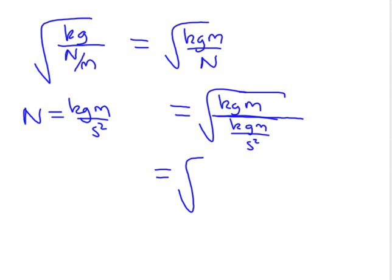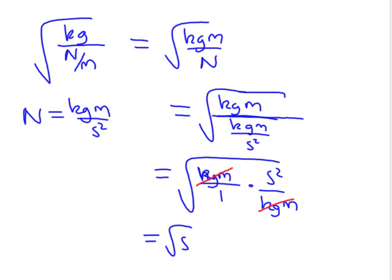So there's our complex fraction. If we flip this complex fraction, we have a kilogram meter all over one times a second squared over a kilogram meter, and you can see these guys cancel. And then we just have square root of second squared, which is a second. So indeed, we get units of seconds.